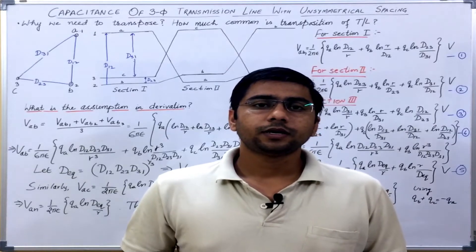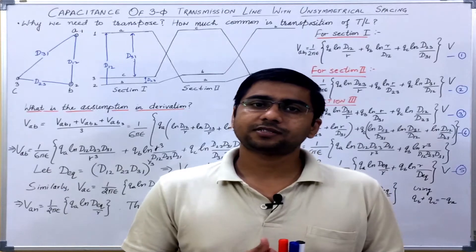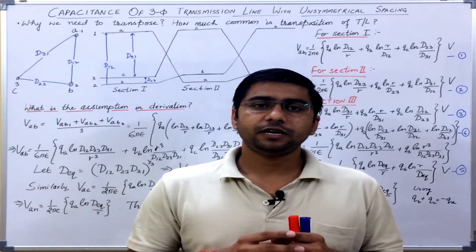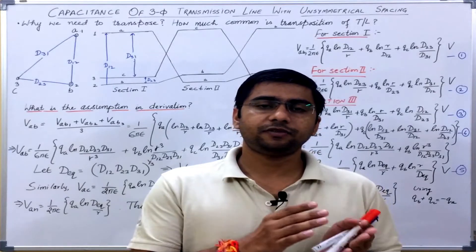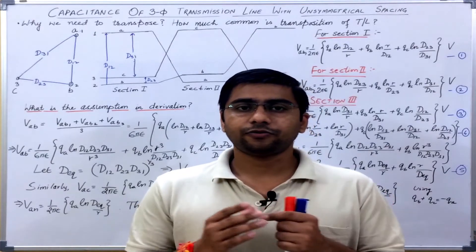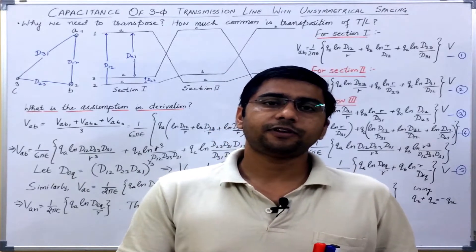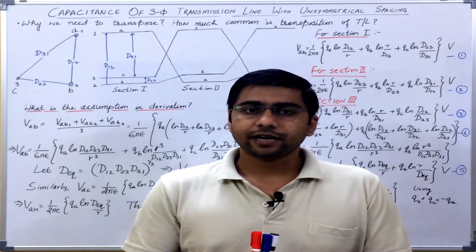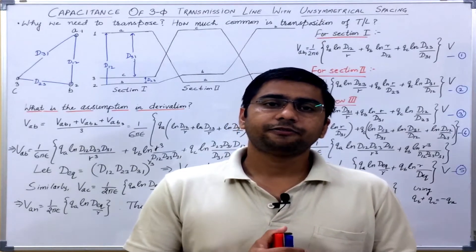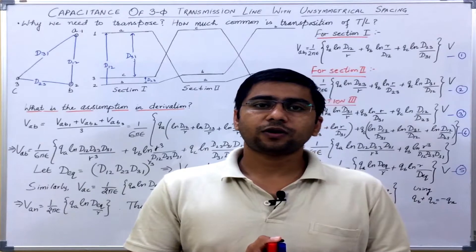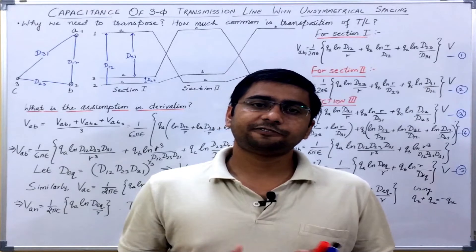Hello everyone. In the previous lecture we derived an expression for the capacitance of a transmission line in which the conductors were placed symmetrically — that is, the distance between each conductor of each phase was the same, meaning they were placed on the vertices of an equilateral triangle. Today we will derive an expression for the capacitance of a transmission line where the conductors are not spaced symmetrically, that is, the spacing between the different phases is different.